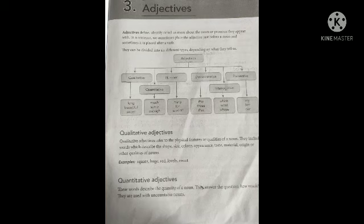Qualitative adjectives refer to the physical features or qualities of a noun. They include words which describe the shape, size, color, appearance, taste, material, origin or other qualities of a noun. Examples: square - a shape, huge - a size, red - a color. She is a lovely girl - lovely, a qualitative adjective. Roses are red - red, a color.